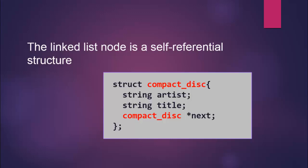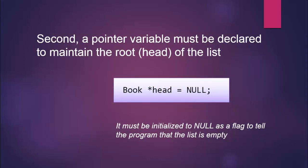Once you've defined the structure, we can begin the actual coding to create and utilize the linked list. The next thing we do is declare our root or head variable, and it too must be a pointer of the structure type. In this case, a pointer to a structure called book, initialized to null. Null tells us the linked list is empty, so the very first thing we do is declare that pointer variable and assign it the value of null.